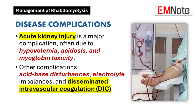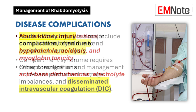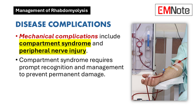Complications of rhabdomyolysis include acute kidney injury, acid-base disturbances, electrolyte imbalances, disseminated intravascular coagulation, and mechanical complications such as compartment syndrome or peripheral neuropathy. Acute kidney injury is often due to hypovolemia, acidosis, tubular obstruction, and the nephrotoxic effects of myoglobin. The presence of myoglobinuria or the degree of CK elevation does not reliably predict acute kidney injury, though the correlation is stronger in traumatic rhabdomyolysis. Compartment syndrome and peripheral nerve injury are mechanical complications that can result from muscle swelling. Nerve injury may cause paresthesias or paralysis, often affecting multiple nerves in the same extremity. Compartment syndrome requires prompt recognition and management to prevent permanent damage.